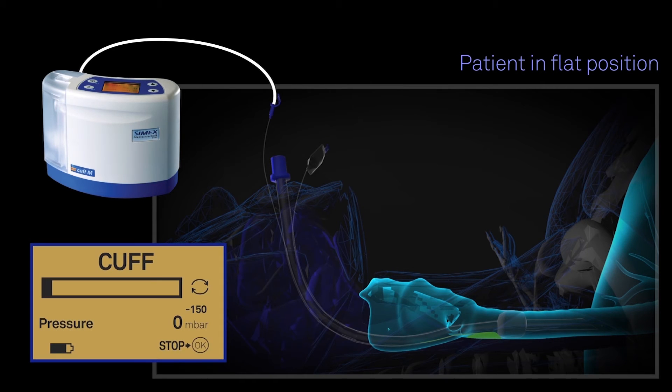When the Symex automated aspiration system is connected to the subglottic endotracheal tube, it can be programmed and tailored to each patient's condition.